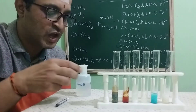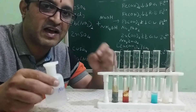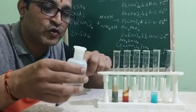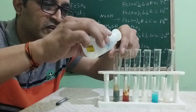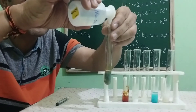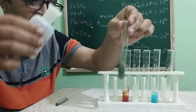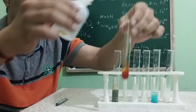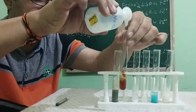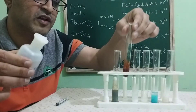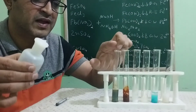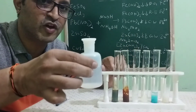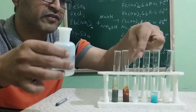The next thing is we have to check whether all these precipitates are soluble in excess of sodium hydroxide or not. I will add sodium hydroxide to the first one — the precipitate is insoluble. Let me try with the reddish brown precipitate — this is also insoluble. So Fe(OH)2 and Fe(OH)3 are both insoluble in excess of sodium hydroxide.